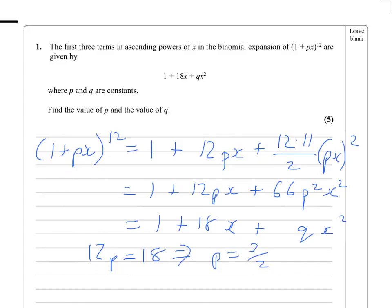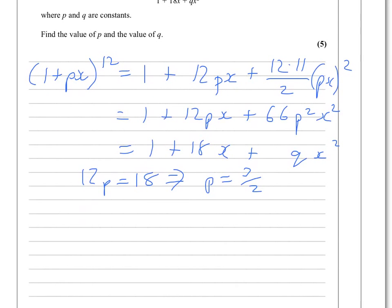And 66p squared must equal q, so 66p squared equals q, and that is 9 over 4, so that tells us that q equals 148.5.